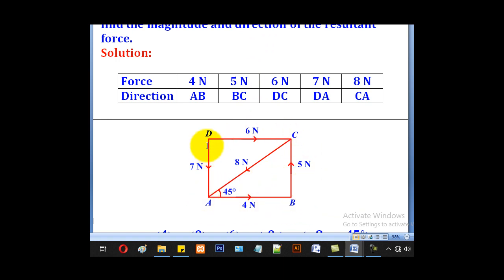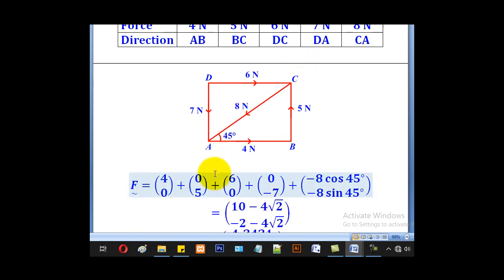After labeling our square, we shall now put the forces. 4 corresponds to AB, so put 4. 5 corresponds to BC, so put 5. 6 corresponds to DC, so put 6. 7 corresponds to DA, so put 7. 8 corresponds to CA, so put 8. That's our complete diagram.